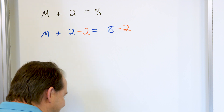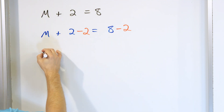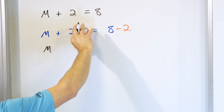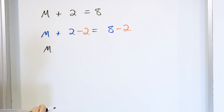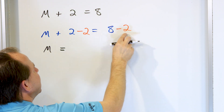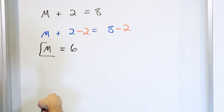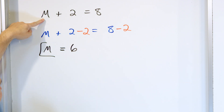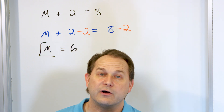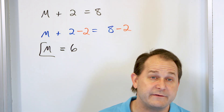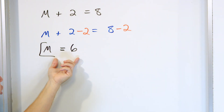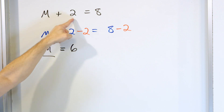So all we want to do is note that we have a plus 2, so we're going to do the opposite — minus 2. But if we do it to this side, then to keep it balanced, we have to do it to the other side. That's the only way it works. What happens? We have M, but then we have plus 2 minus 2, and 2 minus 2 is 0, so it disappears from this side. You really haven't changed the equation because you also subtracted 2 from the other side. 8 minus 2 is 6, and you circle this as your answer.